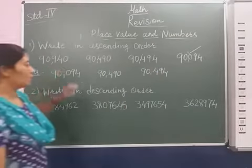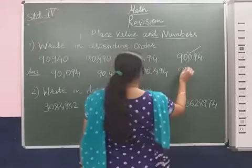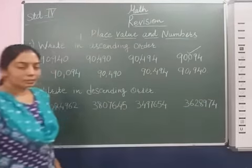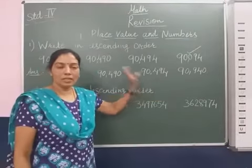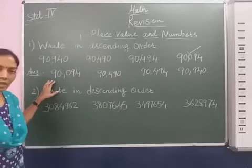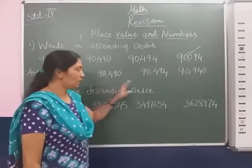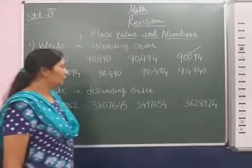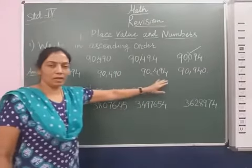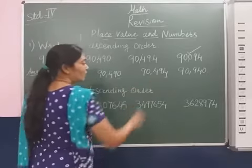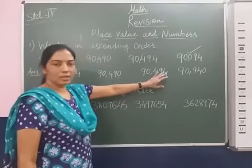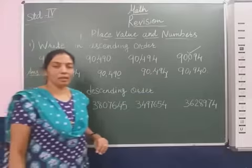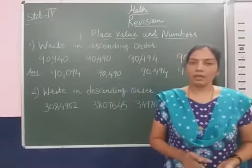The greatest number we place last, because in ascending order we are arranging from smaller to greater. So the ascending order is: first 90,094, then 90,490, then 90,494, and finally 90,940. Only one place value is different between 90,490 and 90,494, so 90,490 comes first.